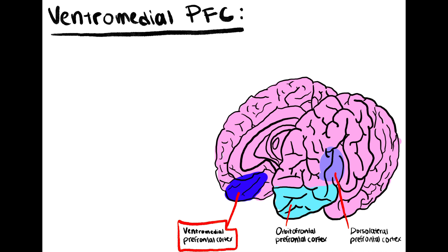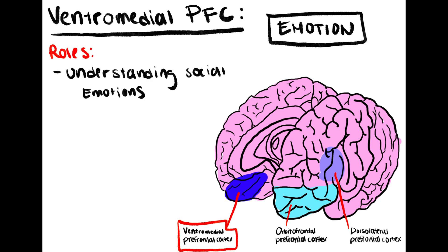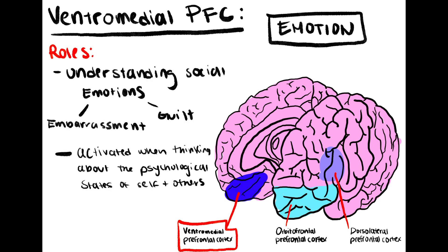The ventromedial prefrontal cortex is involved more in the emotional processing side of things. It plays a role in understanding social emotions like embarrassment or guilt and is activated when thinking about the psychological states of self and others. This activation results in the VMPFC playing a role in one's theory of mind abilities.